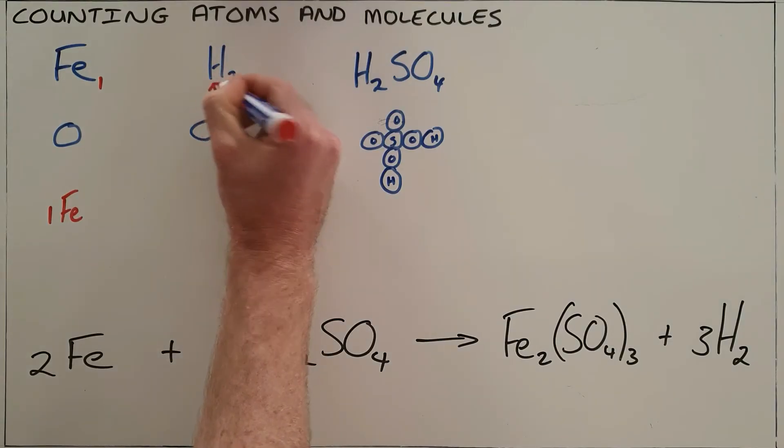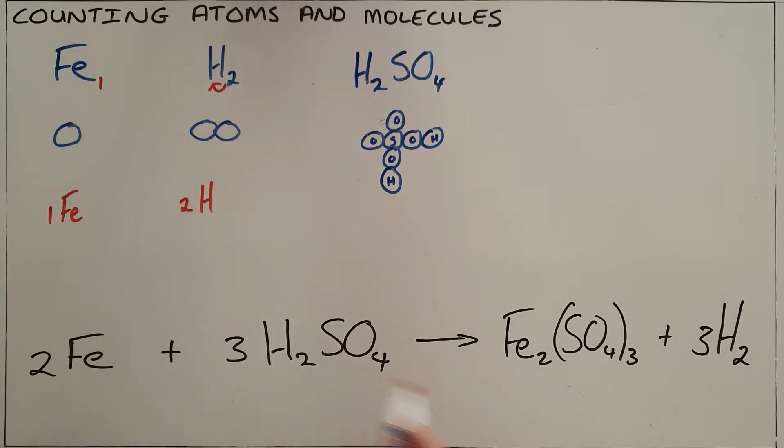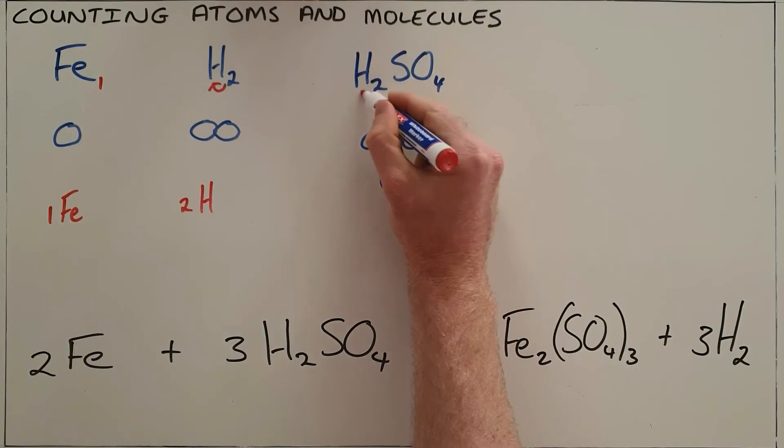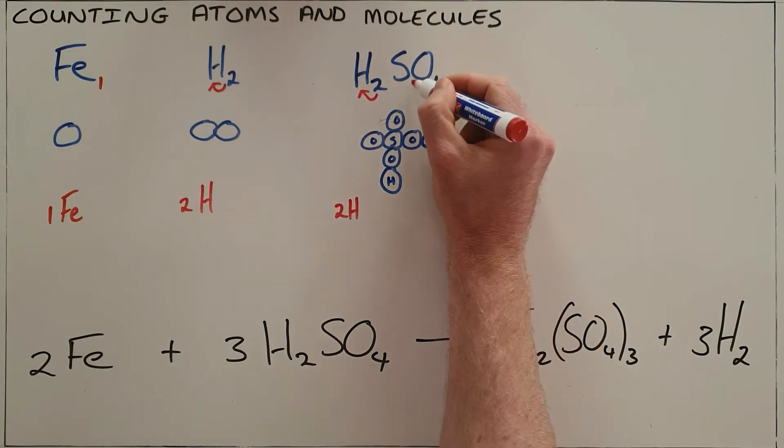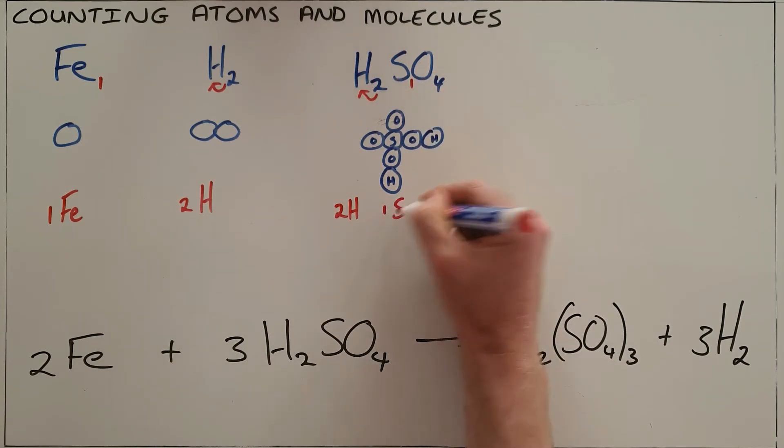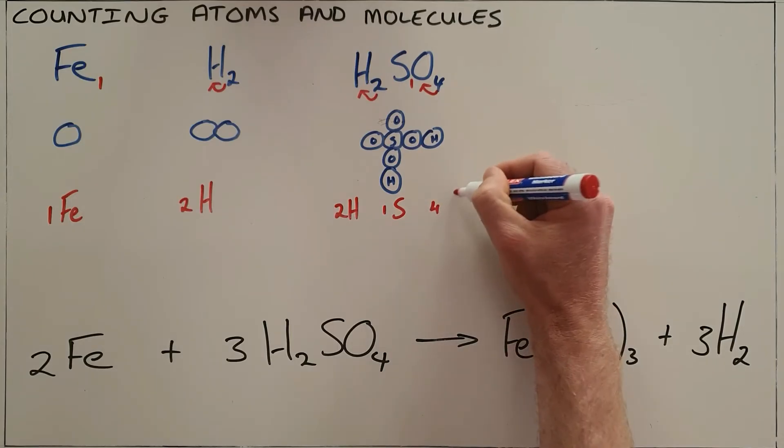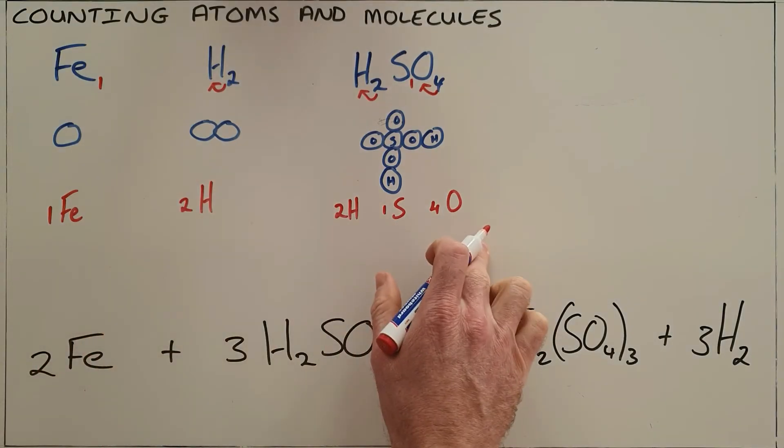This two over here tells us that there are two hydrogen atoms present in this molecule. And the same notation applies here: this two after the hydrogen tells us there are two hydrogen atoms present, there is no number which refers to it being one sulfur atom, and that four applies to the oxygen, telling us there are four oxygen atoms present. So that is how we count the number of atoms inside a molecule.